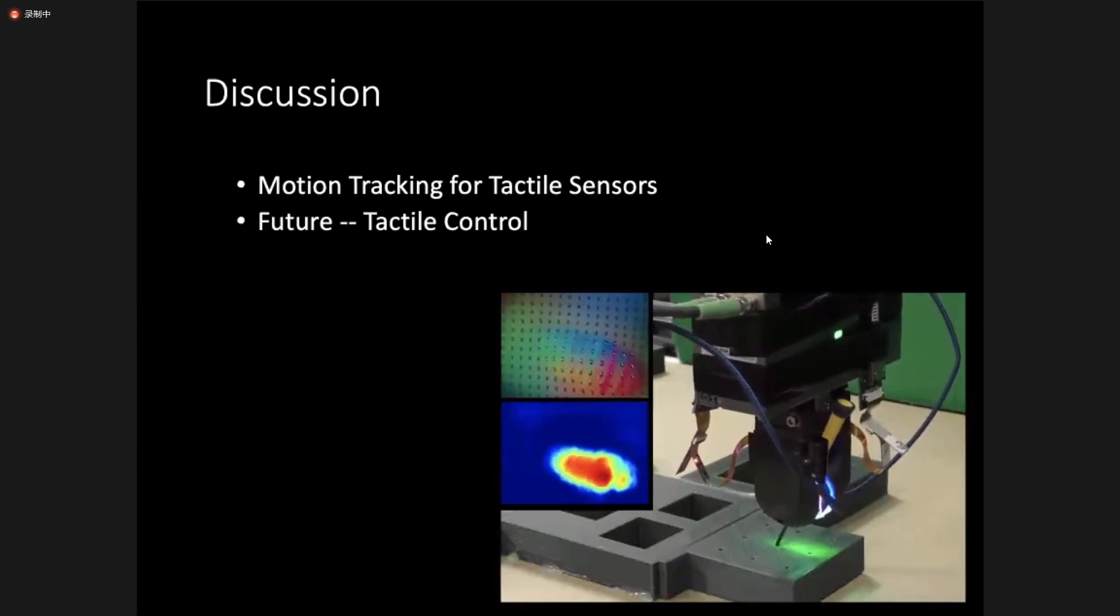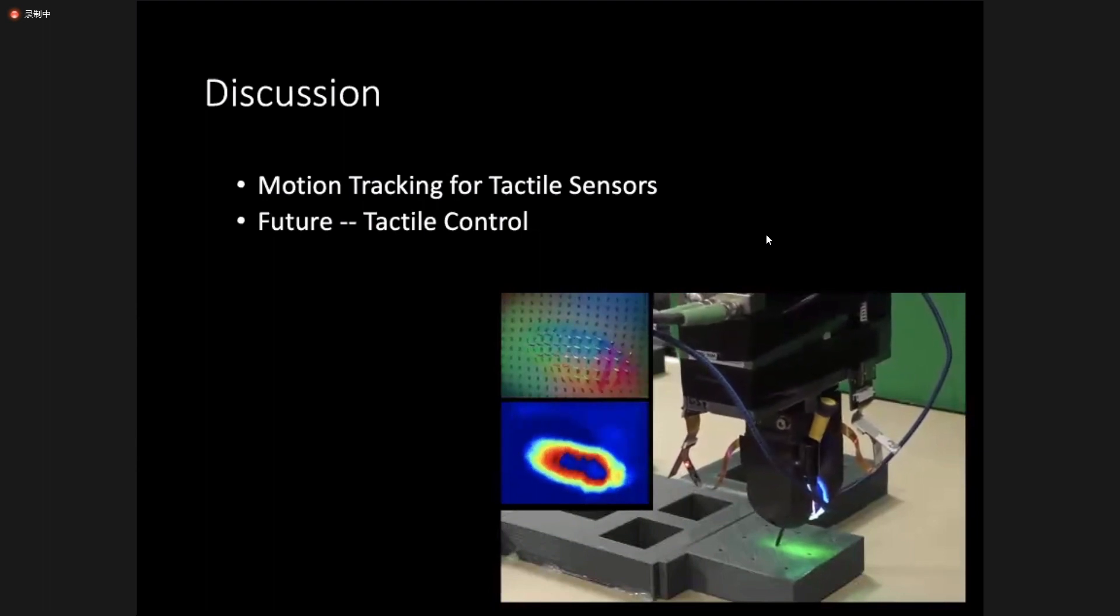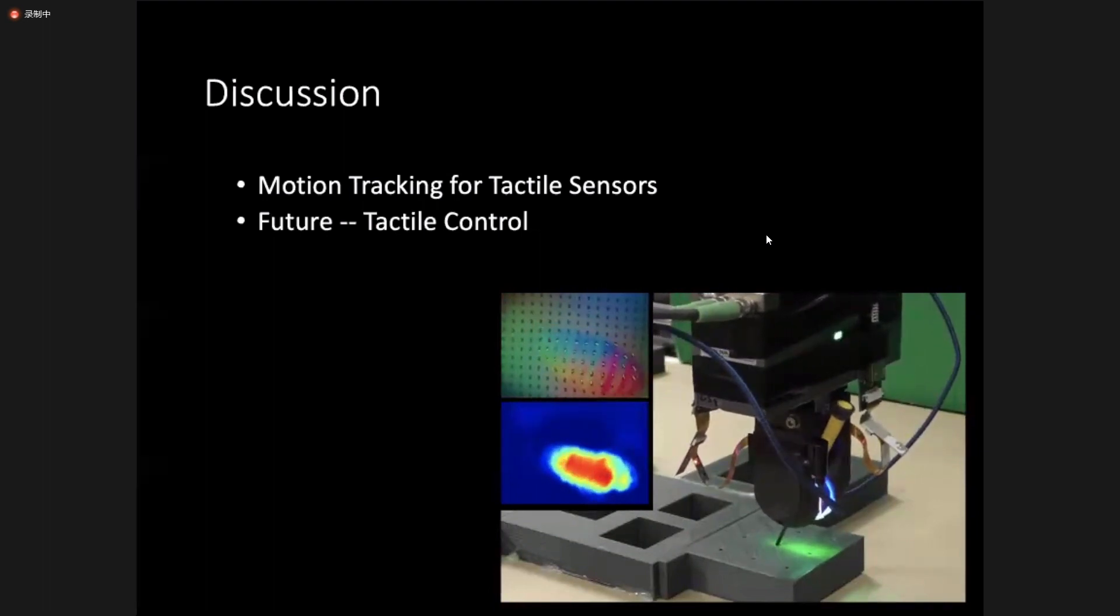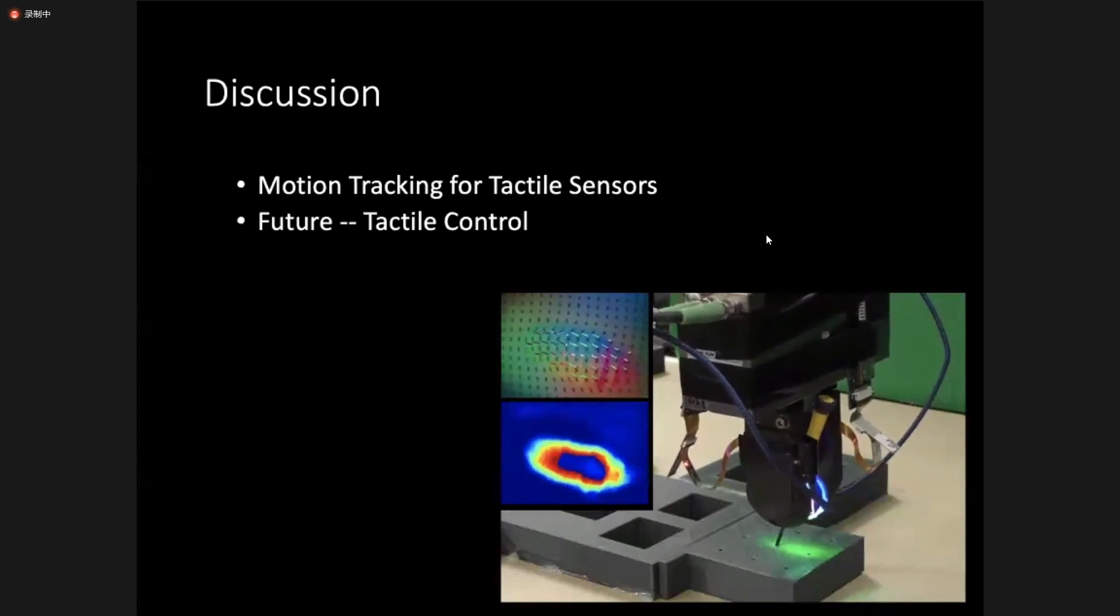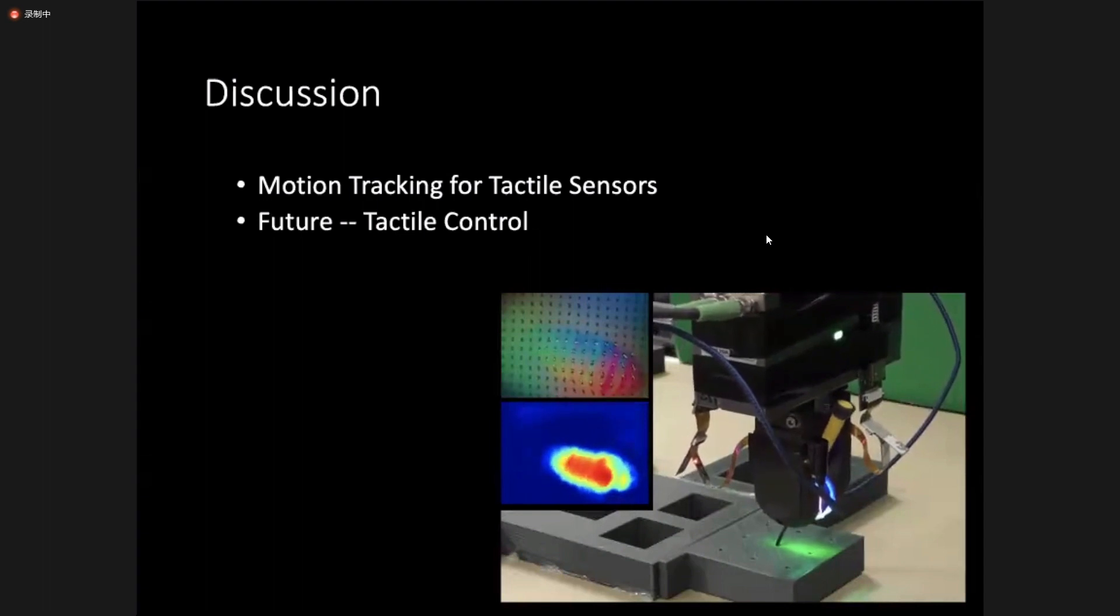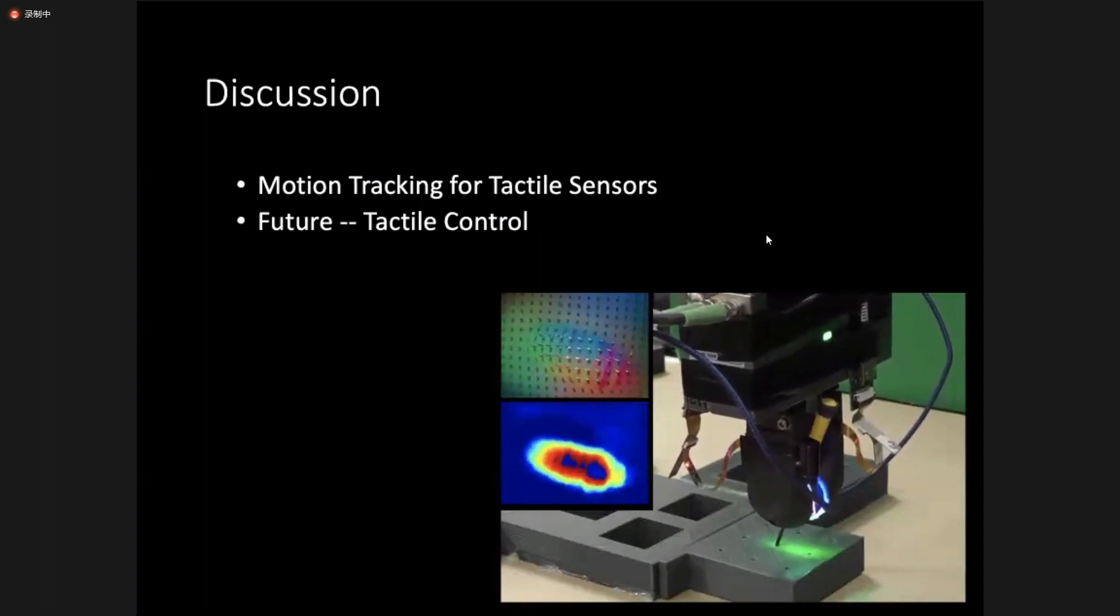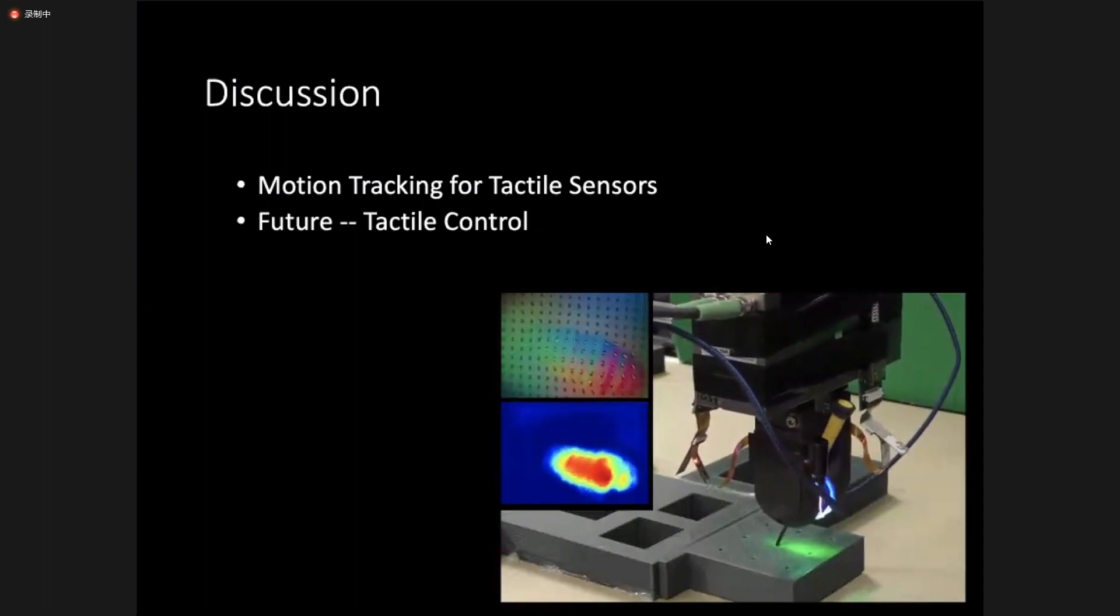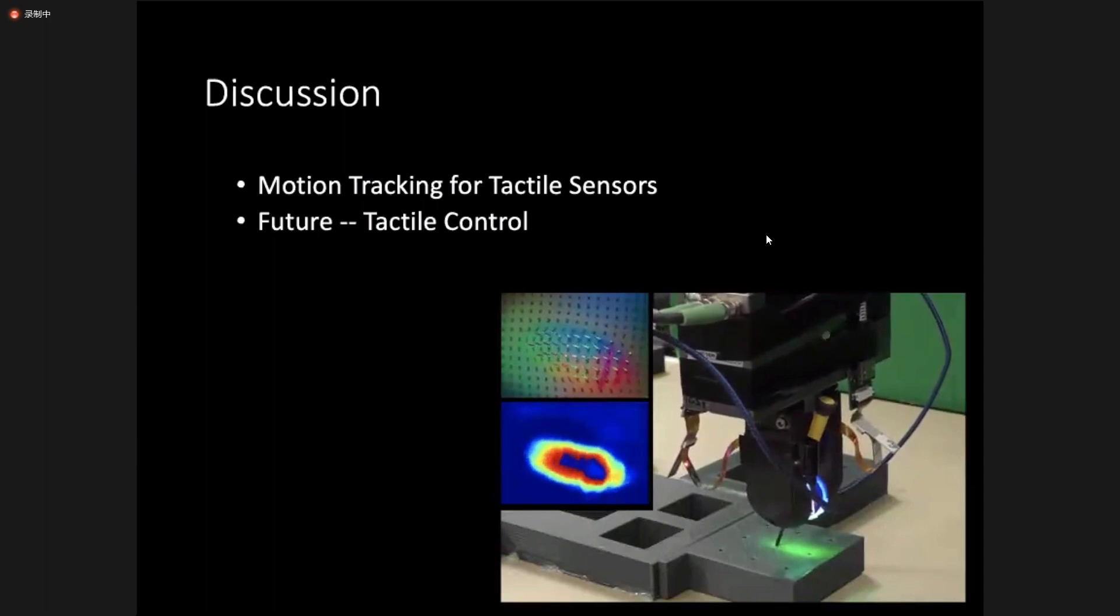Therefore, if you could embed incipient slip detection into this device, would that improve the stability of the grasp? That's right. You are right. And we have published a paper like two years ago about incipient slip detection on this type of tactile sensor. Excellent. Other questions?